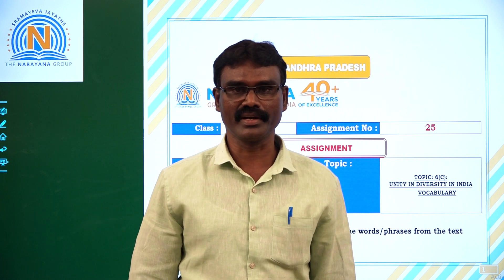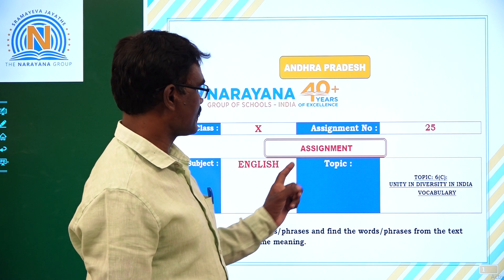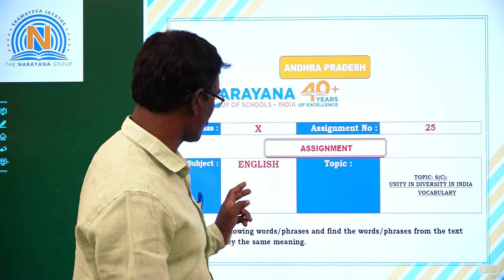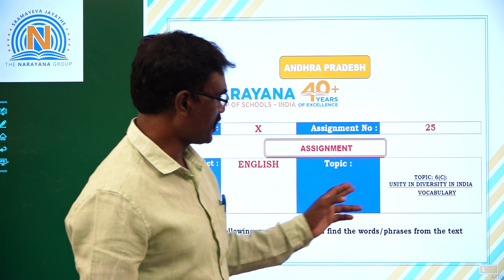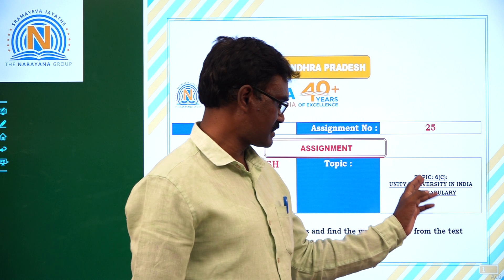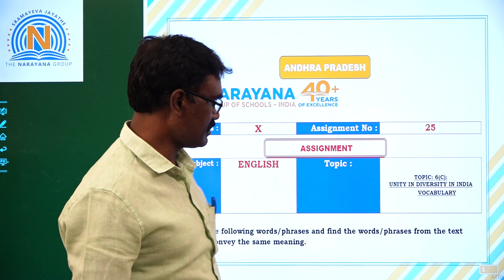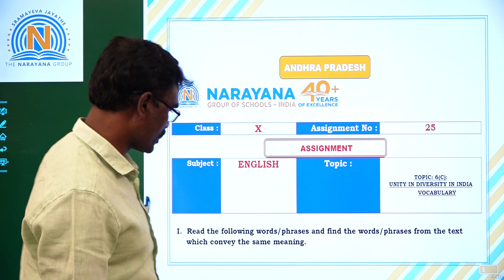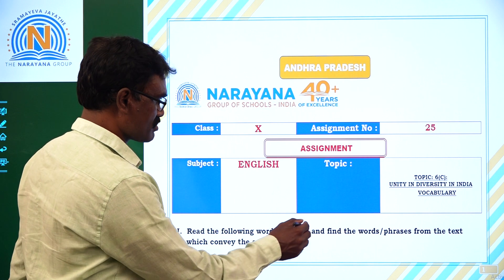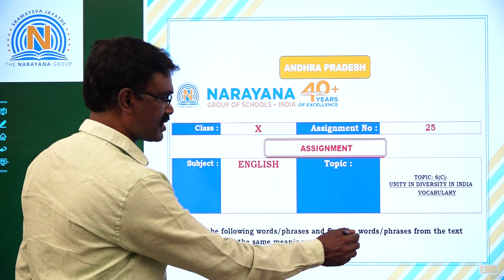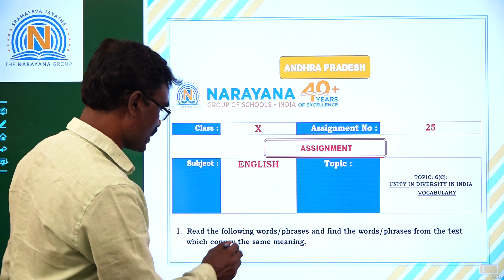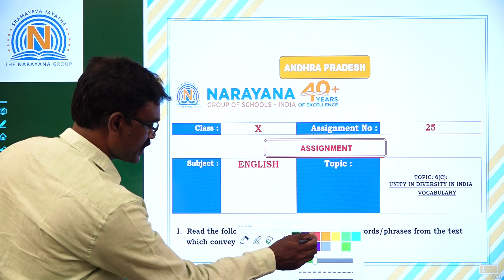Good morning children, welcome to Narayana live classes. This is assignment number 25 of 10th class, subject English, topic Unit 6 Reading C: Unity and Diversity in India, vocabulary. Read the following words and phrases and find the words or phrases from the text which convey the same meaning.